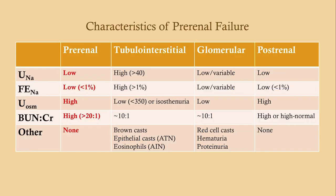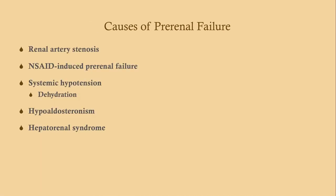Here are the characteristics of pre-renal failure. I've divided these into five talks: pre-renal, tubular, interstitial, glomerular — which I've had to divide into two because there's so much material — and then post-renal. These are the causes of pre-renal failure, and these are very important ones to know.